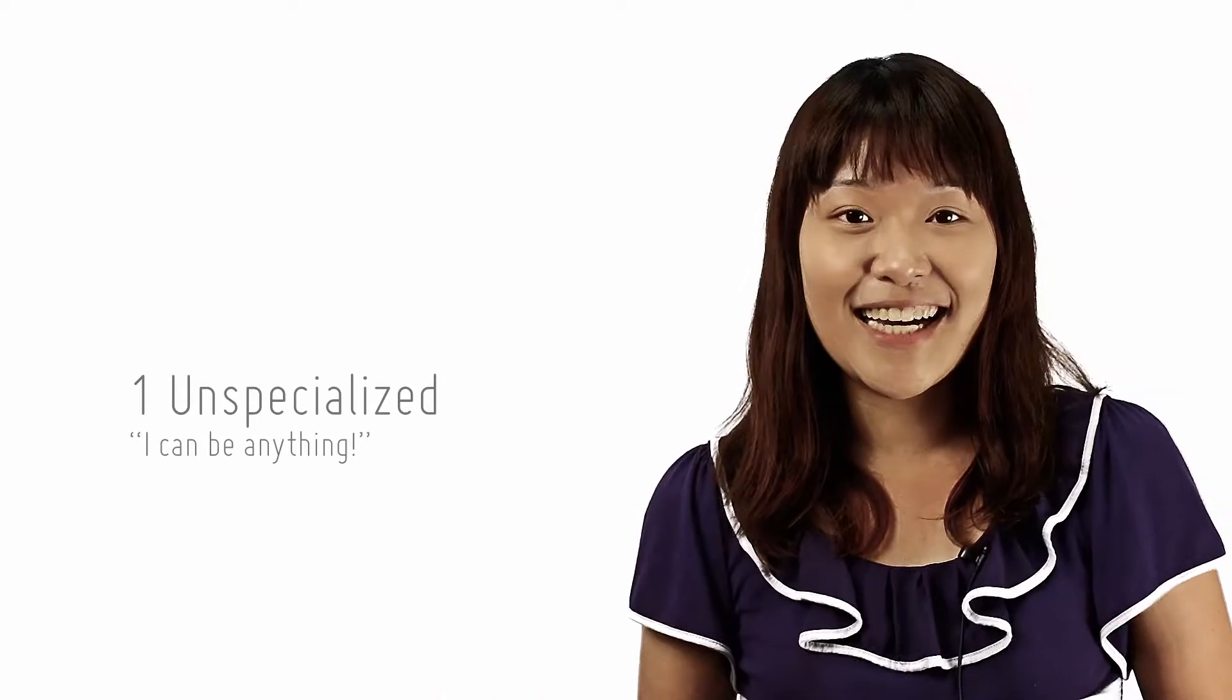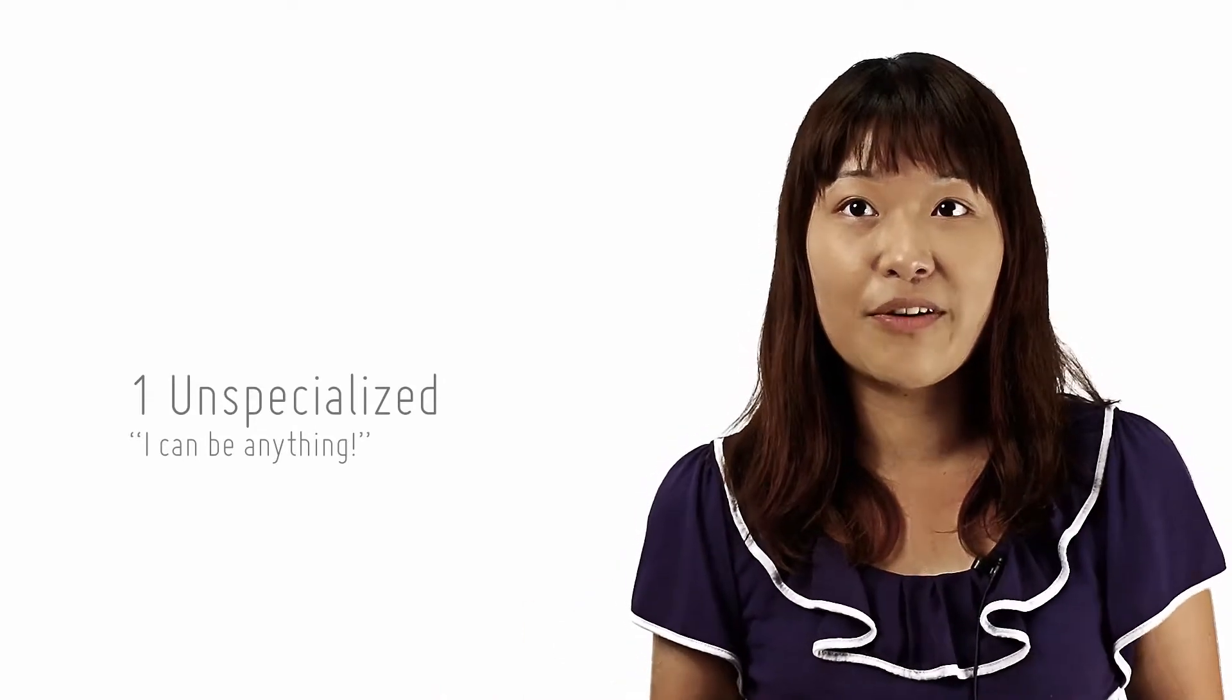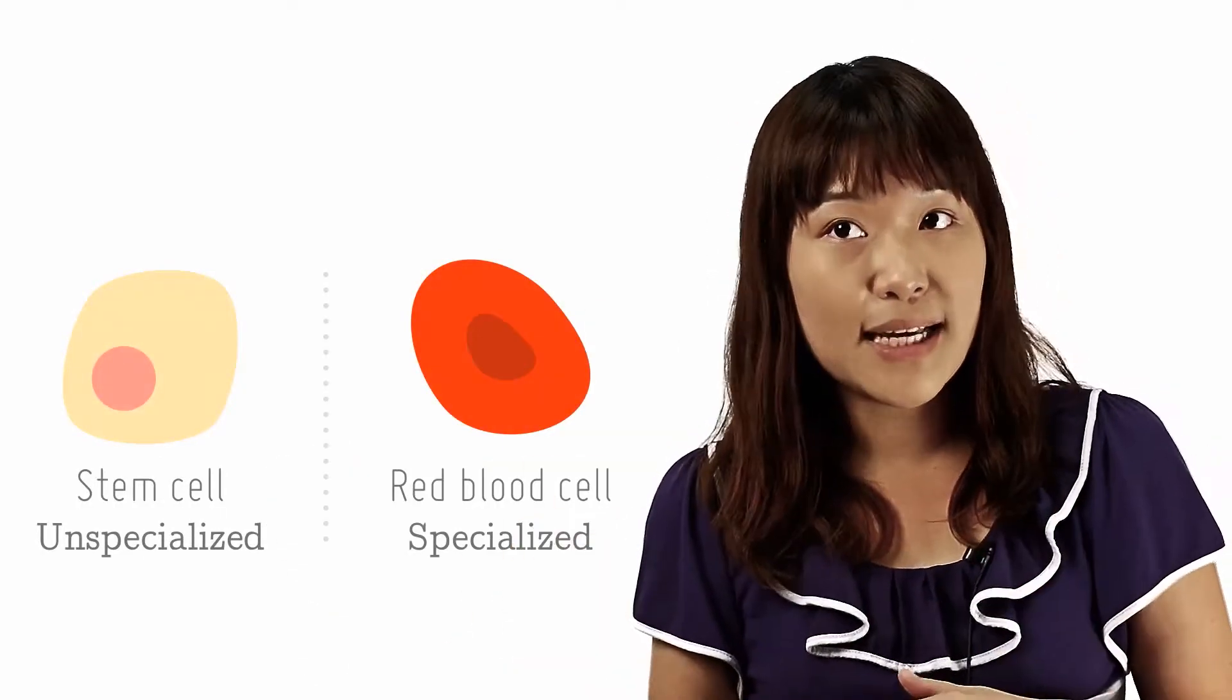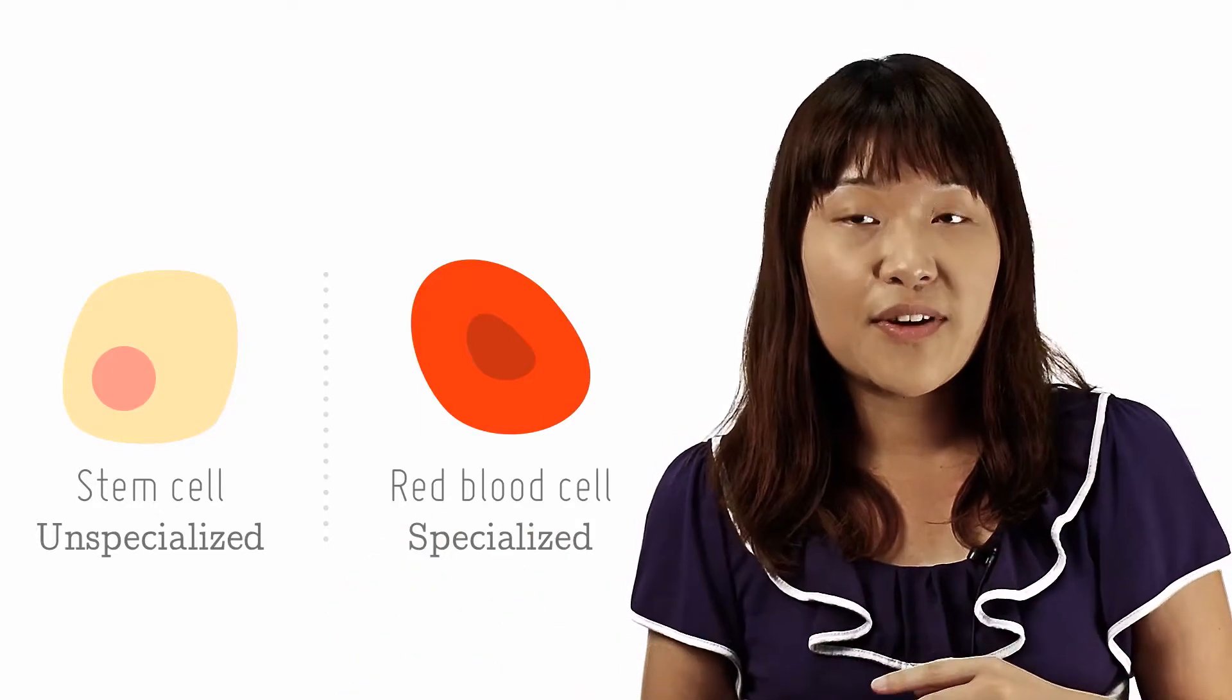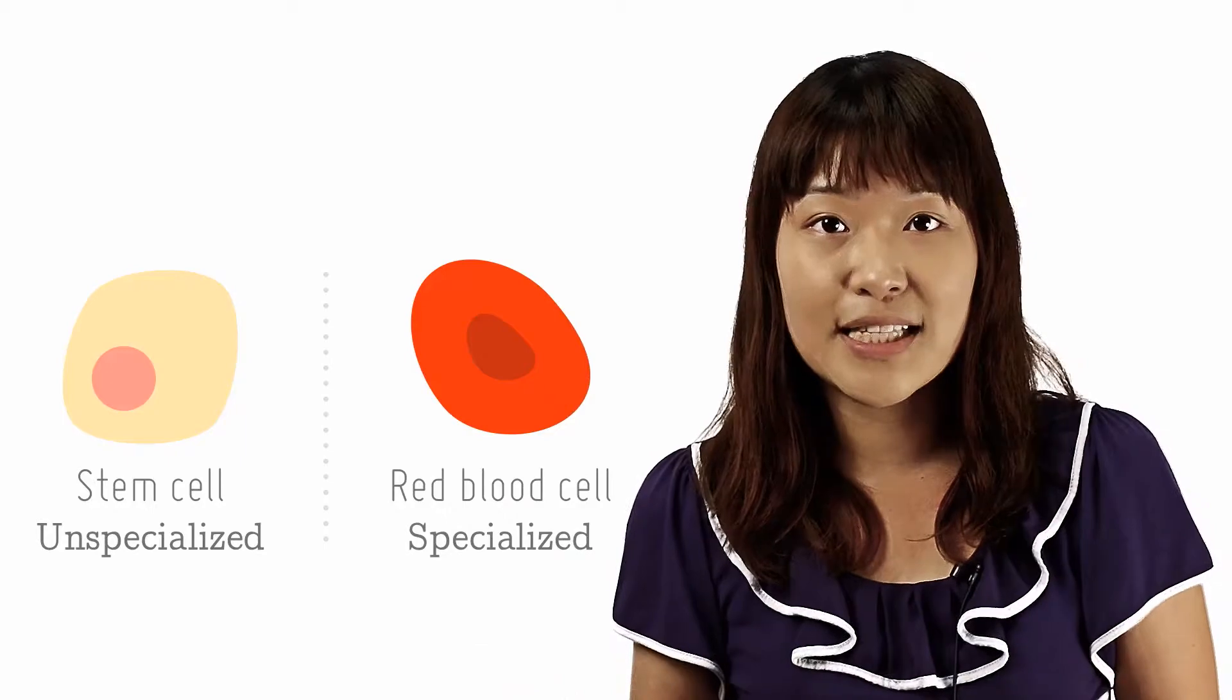Firstly, they are unspecialized. This means that stem cells do not have tissue-specific features for it to perform any particular function. We can contrast this to specialized cells, such as red blood cells, which have the tissue-specific feature of containing hemoglobin that enables the cell to transport oxygen.